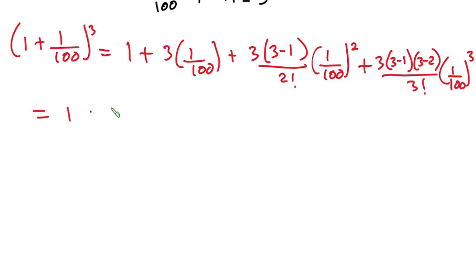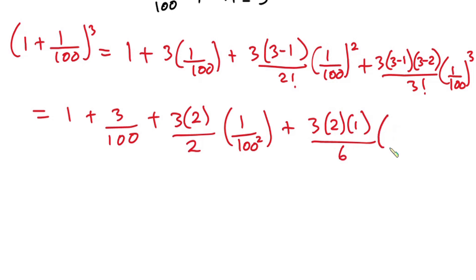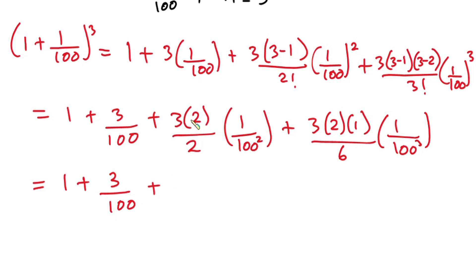Simplifying: we have 1 plus 3/100, then 3×2 over 2 is 3, so plus 3×(1/100)², then 3×2×1 over 3! is 1, so plus 1×(1/100)³. This gives us 1 plus 3/100 plus 3/(100²) plus 1/(100³).